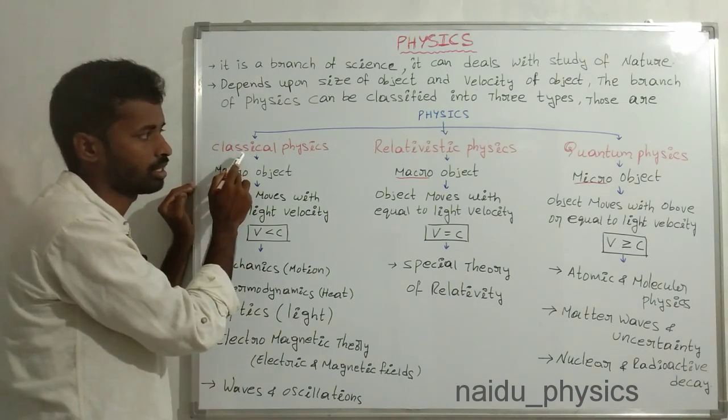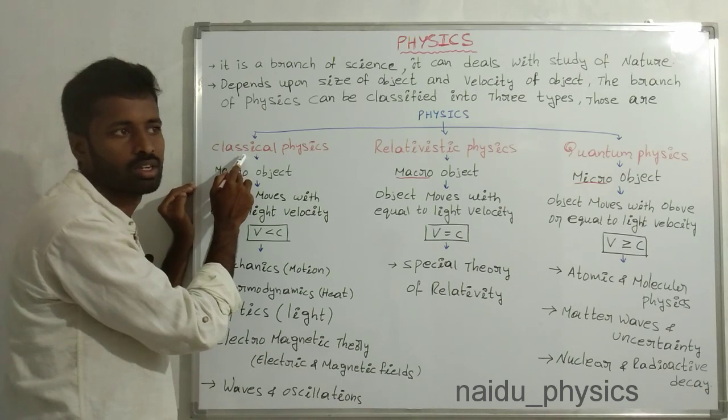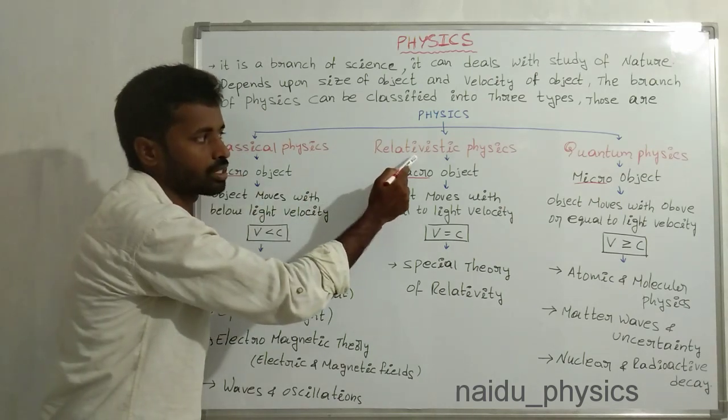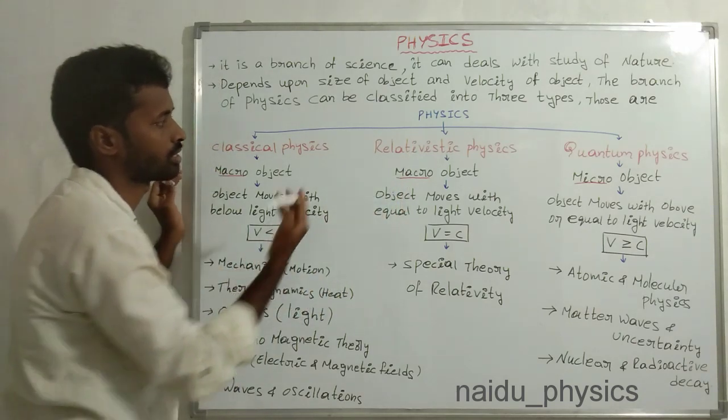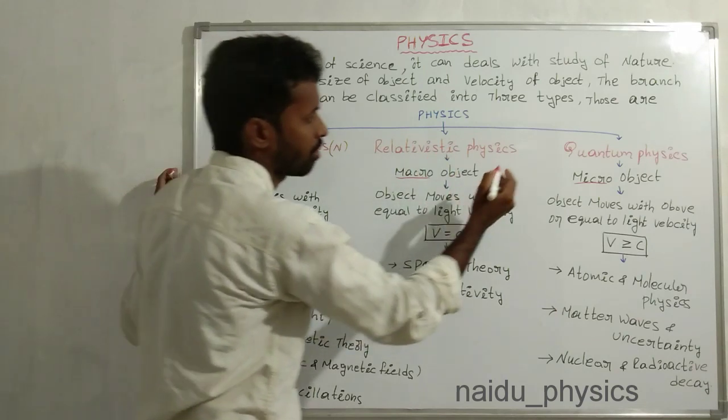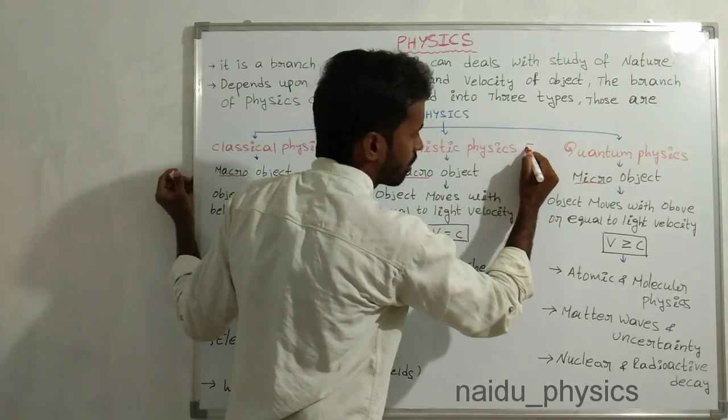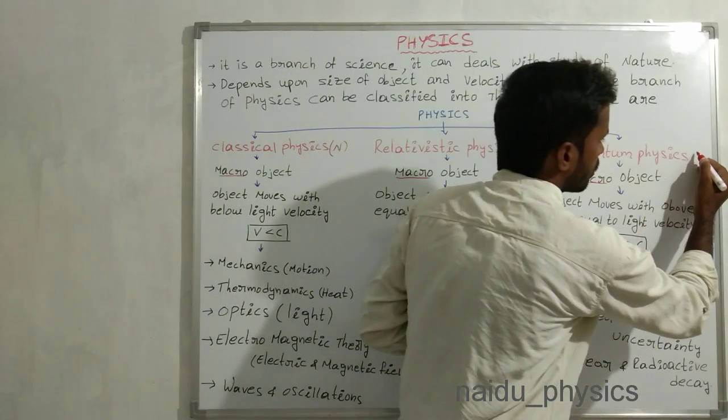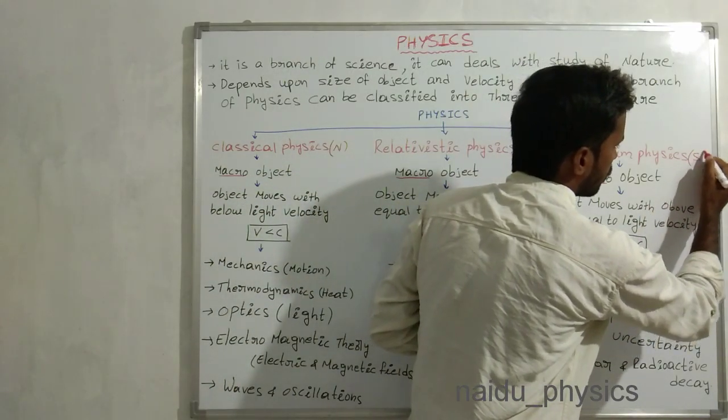Classical physics is also called Newtonian mechanics. Relativistic physics is also called Einstein mechanics. Quantum physics is also called Schrodinger physics.